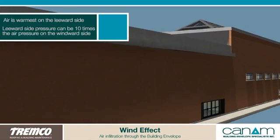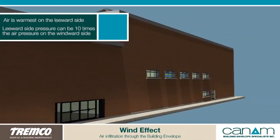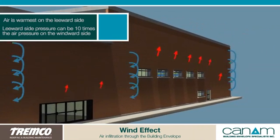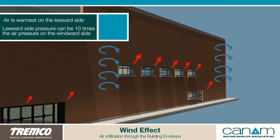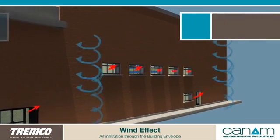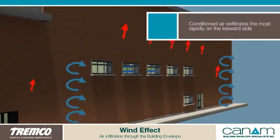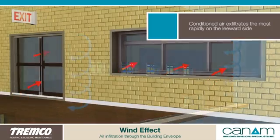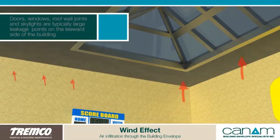Air is warmest on the leeward side of the building, where the air pressure can be ten times that of the windward side. This means air exfiltrates most rapidly on the leeward side, through doors, windows, roof-wall joints, and skylights.